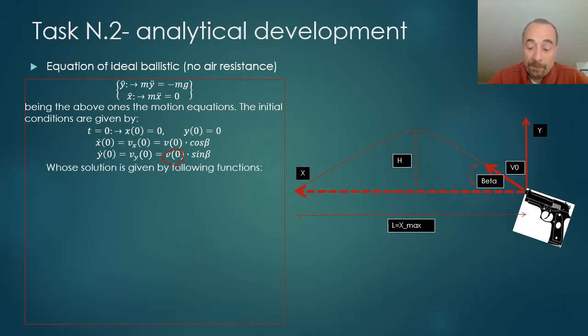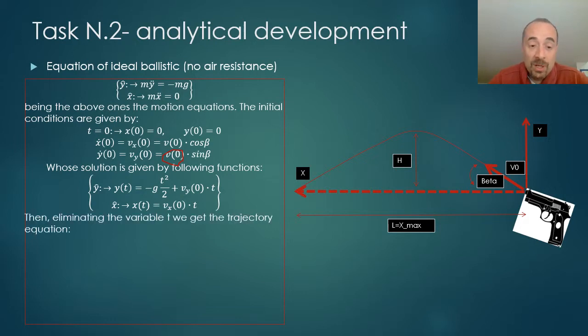The solution of the motion equations are given by two functions. y of time equals minus g t squared half plus velocity y zero times t. x of time equals velocity x zero times t. Those are the parametric equations of the bullet motion depending upon time. If we eliminate the variable time among the two equations and we replace t, we get the trajectory equation, which is a function of y and x. And we recognize this is a parabola.